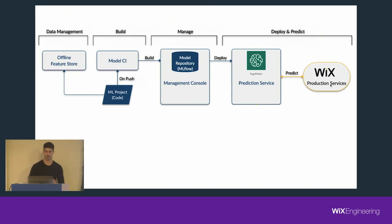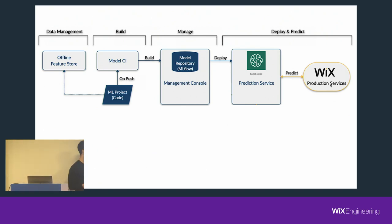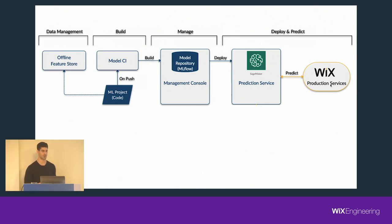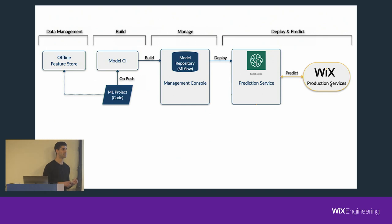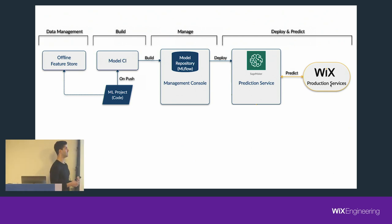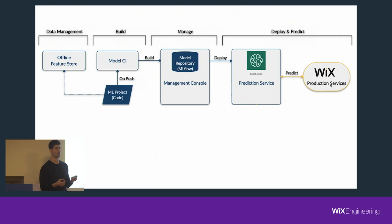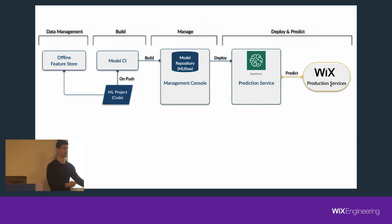Model instances or model builds are deployed via a UI or an API to AWS SageMaker, the managed service we use as a model hosting solution. Once an endpoint is created or updated on SageMaker, we register the new model instance at a component we call the prediction service, which acts as a gateway to models deployed on SageMaker. Think about it as the API gateway for ML models managed via the platform. Having a centralized serving component gives us a few very strong benefits.